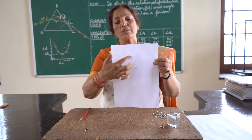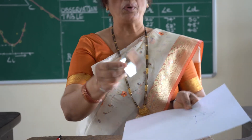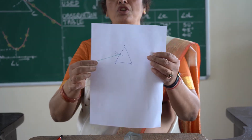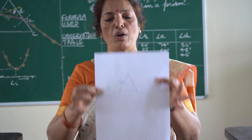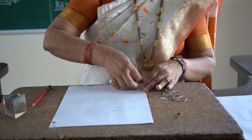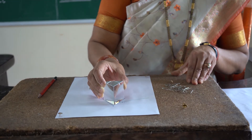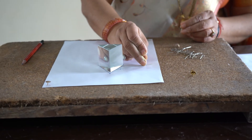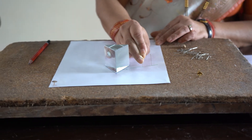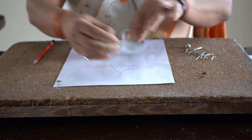Take the glass prism and draw its outline on a sheet of paper — the triangular portion — and draw the incident ray on the sheet. Fix this paper on the hardboard using thumb pins from all four sides so it doesn't move. Place the prism back at its outline and put three pins on the incident ray, making sure the distance between each pin is at least two centimetres.